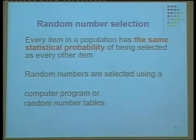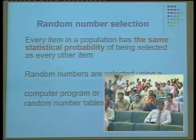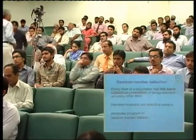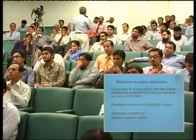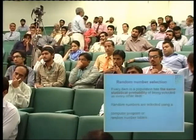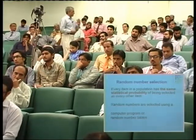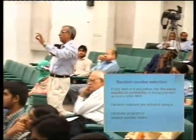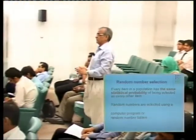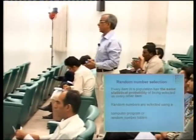In the statistical method using a random number table, each and every unit must have the same statistical probability of being selected — meaning every item has an equal chance of being selected. What is important is that items should have an equal chance irrespective of their value or characteristics. If you have created a population, you blindly select items. Random numbers are normally selected using a computer program or random number tables.